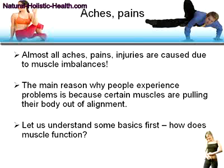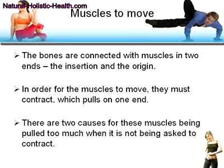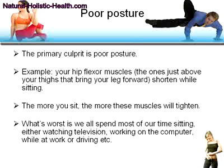Let's understand some basics first. How does muscle function? The bones are connected with muscle at two ends: the insertion and the origin. In order for a muscle to move, it must contract, which pulls on one end. There are two causes for these muscles being pulled too much when they're not being asked to contract.